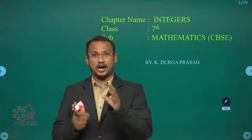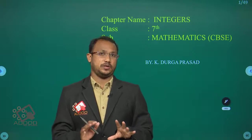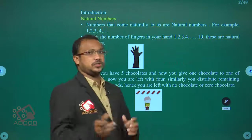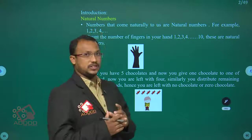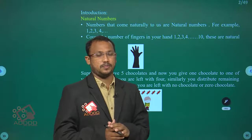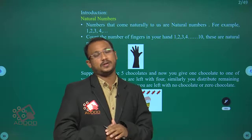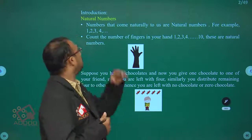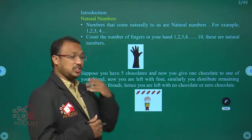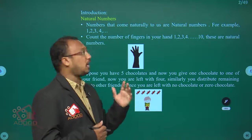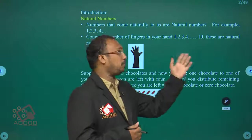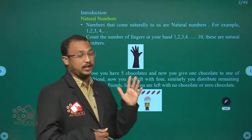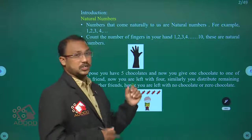Integers are a special category where all numbers combine. First, let's look at definitions. The first type of number is the natural number. Natural numbers are nothing but counting numbers — they come naturally to us. For example: one, two, three, four.